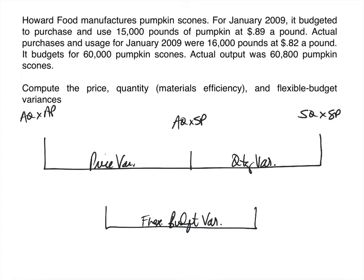Here I have drawn and labeled the chart. Peg one is actual quantity times actual price, specifically for materials. Actual quantity of materials is 16,000 pounds. Actual price was 82 cents per pound, so 16,000 × $0.82 = $13,120.